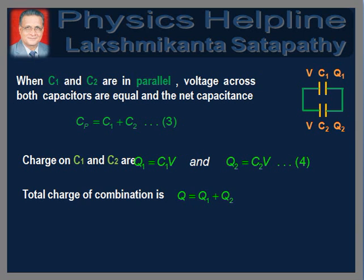When C1 and C2 are connected in parallel, the voltage across both capacitors is equal and the net capacitance is given in equation 3. The charge on the capacitors is given in equation 4, and the total charge on the combination is Q = Q1 + Q2. Now we are in a position to solve the problem using these concepts.